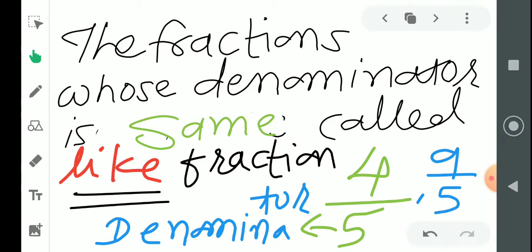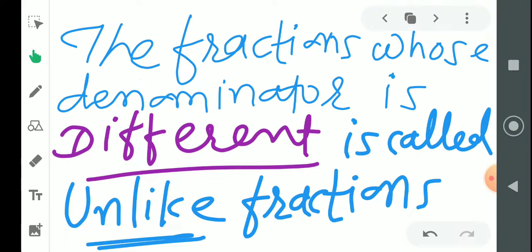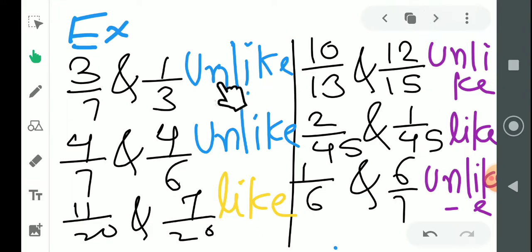The second type is unlike fractions, opposite to like fractions. In like fractions, denominators were the same. In unlike fractions, denominators are different. The fractions whose denominators are different are called unlike fractions. For example, 3/7 and 1/3.